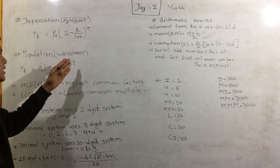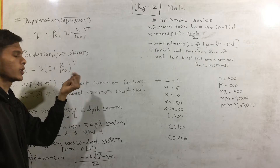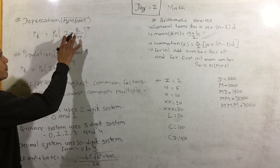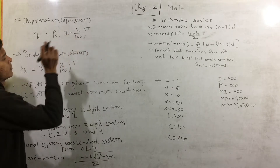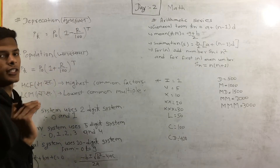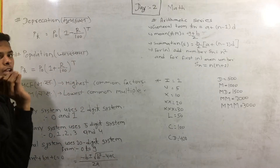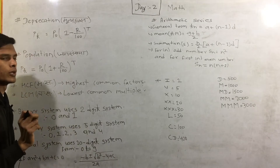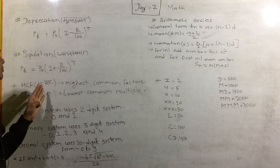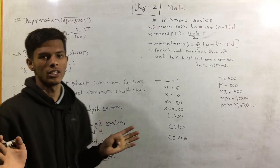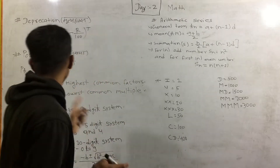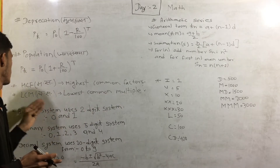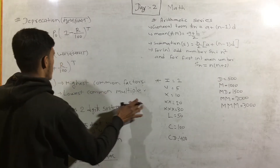Population. Now we have to remember HCF or LCM — we have to think about the formula. HCF and LCM formula: HCF stands for Highest Common Factor, and LCM stands for Lowest Common Multiple.